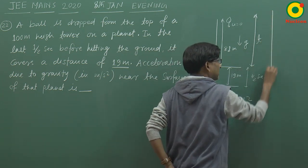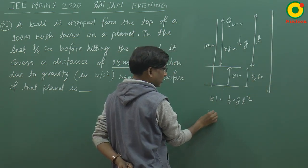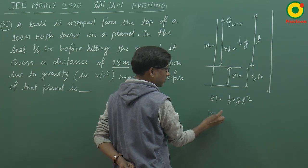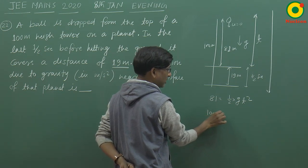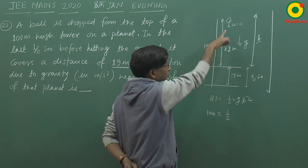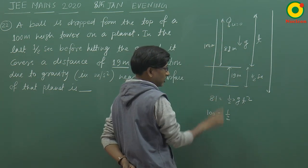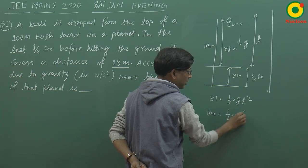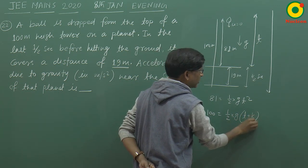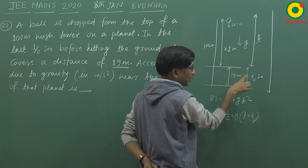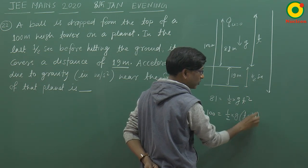फिर इसी formula को यहाँ से यहाँ तक apply करता हूँ। Total displacement हुआ 100 meter, U 0 है। यहाँ से apply कर रहा हूँ यहाँ तक तो ½G — इस बार time जो है वो आधा second बढ़ गया। यहाँ से यहाँ तक time T था, आधा second और लेगा।